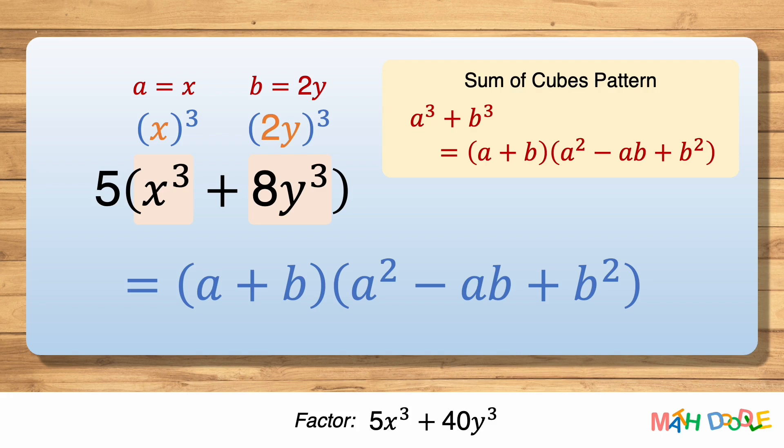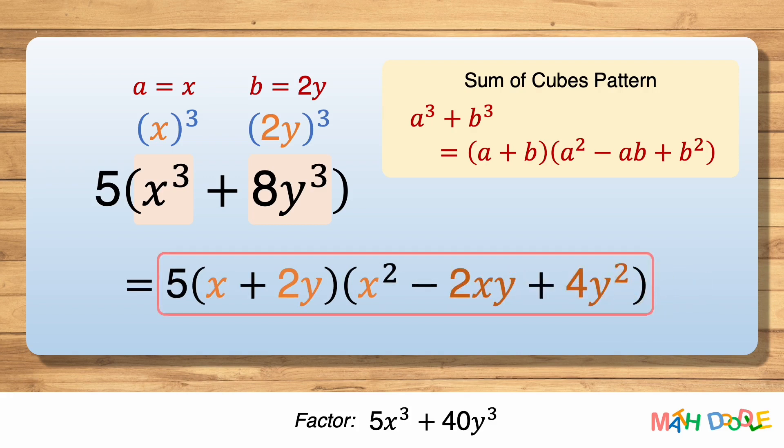Then let's simplify x times 2y and 2y squared. So the binomial can be factored into 5 times x plus 2y times x squared minus 2xy plus 4y squared.